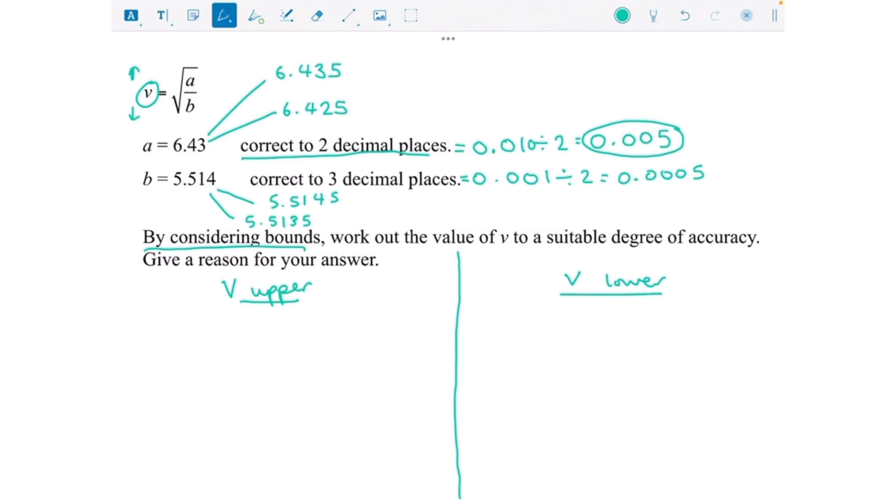When you've got a bounds question and you're multiplying, if it was a times b, then if we wanted the biggest answer we would use the biggest a and the biggest b because multiplying them together would get an even bigger number. Same if you wanted the smallest answers.